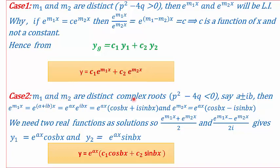Case 2: when the roots are distinct complex roots, which happens when p²−4q < 0. Say the roots are a ± ib, so m1 = a+ib and m2 = a−ib. The first solution y1 = e^(m1·x) = e^(ax)·e^(ibx). Applying Euler's formula, y1 = e^(ax)(cos bx + i sin bx). Similarly, y2 = e^(ax)(cos bx − i sin bx).